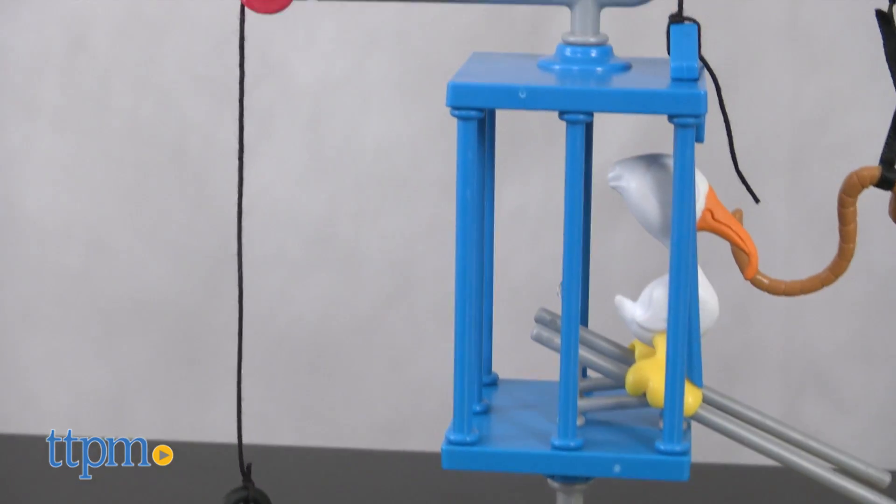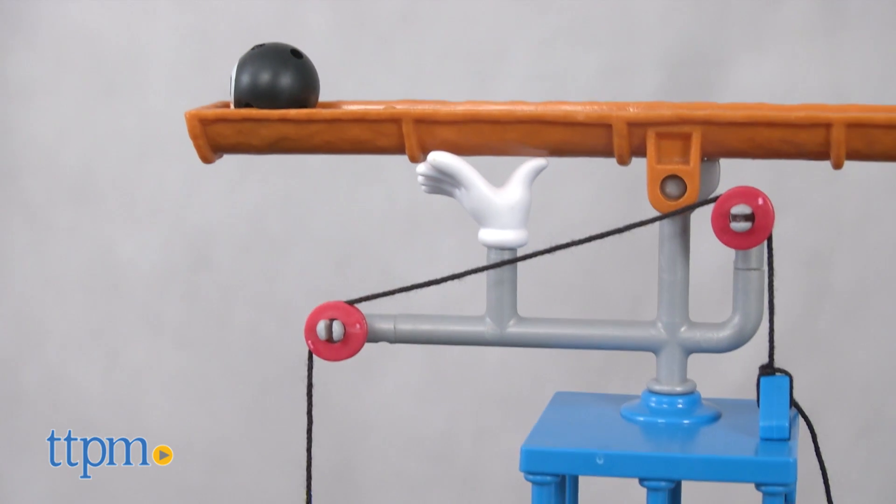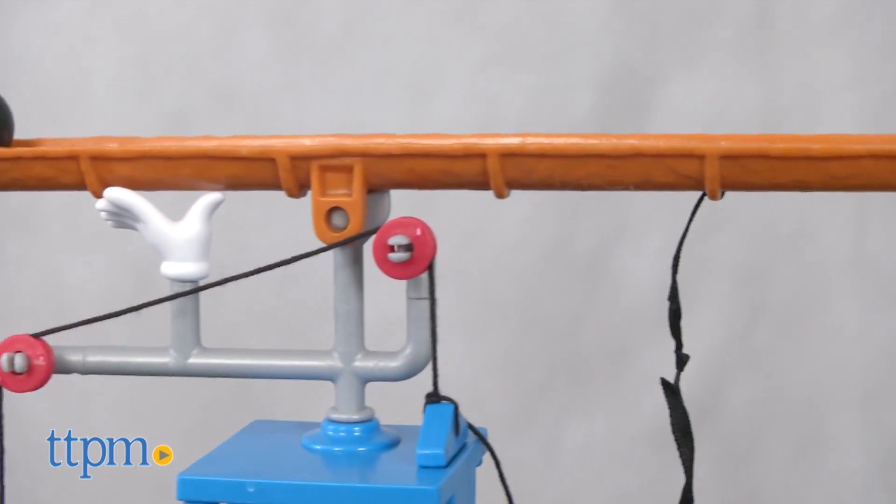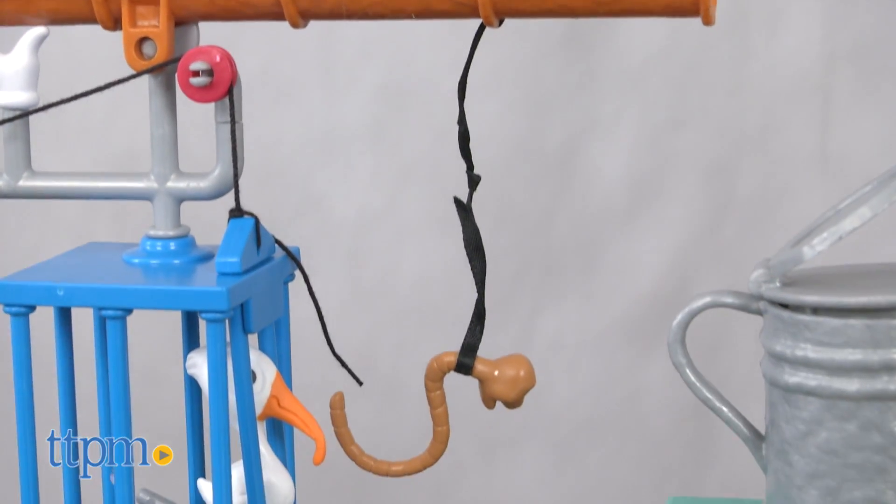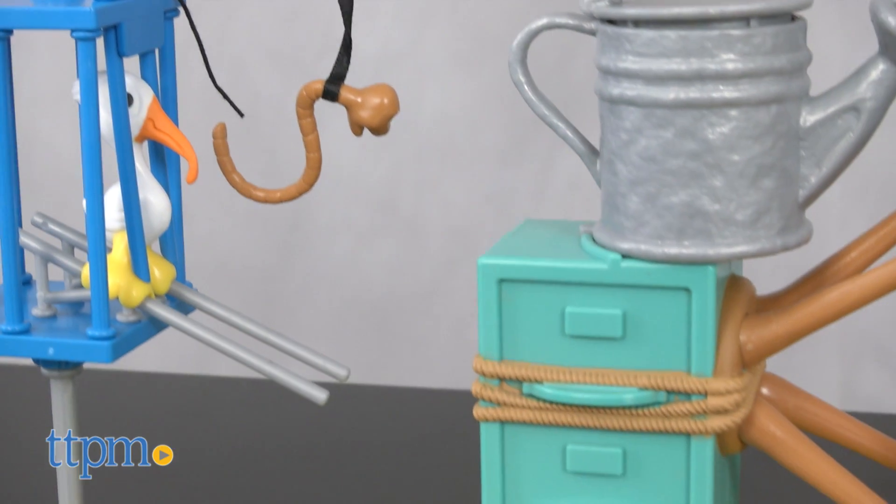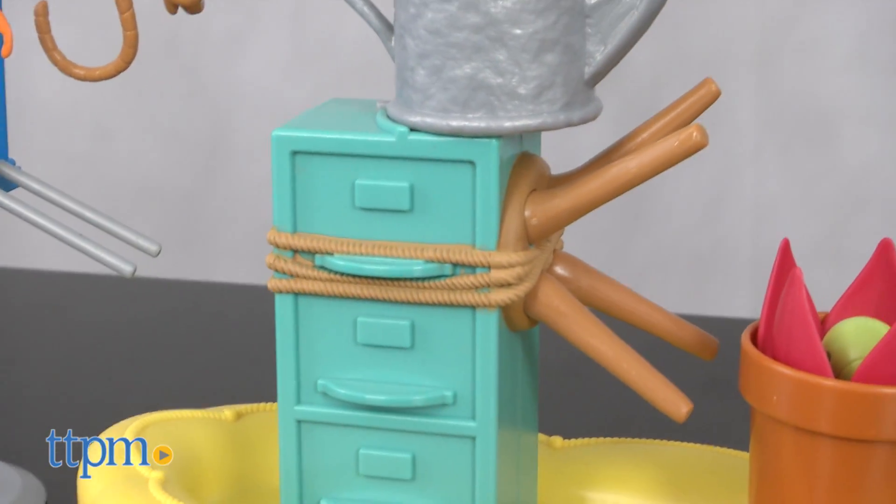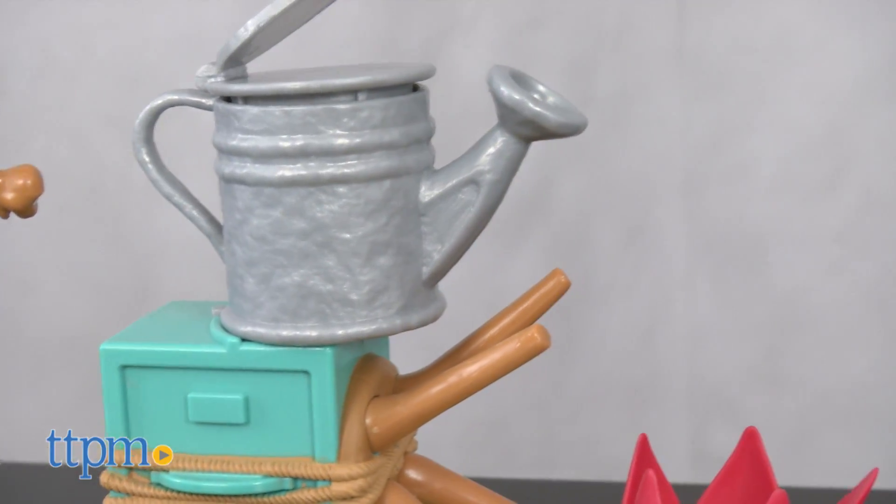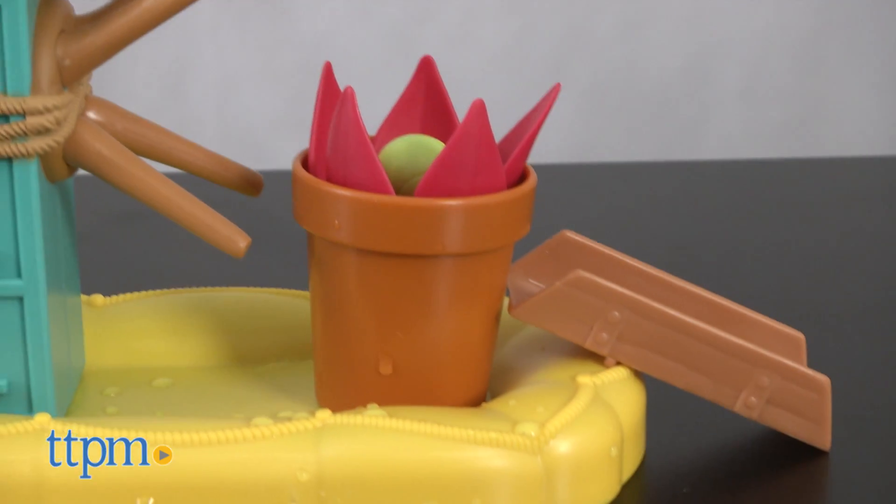With the Garden Challenge, first a basketball hits a sidewalk sign that allows a weight to drop and lift a cage door. Then a bird will slide down and grab a worm, which pulls down a gutter pipe, cueing a pool ball to roll down and bang into the watering can lid. The can will tip over and water the flower, which will release a tennis ball down the ramp.